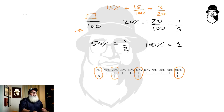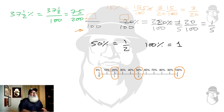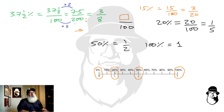If we have thirty-seven and a half percent, this is the same as thirty-seven and a half hundredths, which equals seventy-five over two hundred, and that simplifies to three over eight, or three-eighths. Here we doubled the numerator and denominator of thirty-seven and a half hundredths to get seventy-five over two hundred, then cancelled by twenty-five to get our final answer, three-eighths.